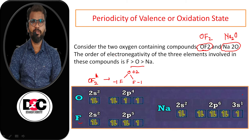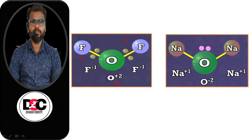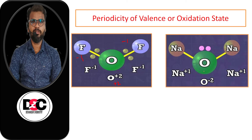In Na₂O, oxygen being more electronegative accepts two electrons — one from each of the two sodium atoms — and thus shows the oxidation state of −2. Sodium, with the electronic configuration 3S¹, loses 1 electron to oxygen and is given the oxidation state of +1. Thus oxidation state can be defined as the charge acquired by an atom based on electronegativity considerations from other atoms in the molecule.